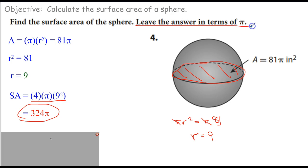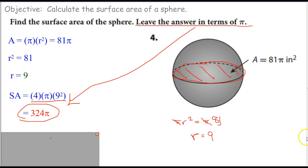It says leave the answer in terms of pi, so 324 pi — we are done. Yahoo. And that actually was the last problem. This is a pretty quick, straightforward lesson. I hope you got something out of the video. If it's still a mystery, come in for tutoring. We'll do it interactively and much slower, and we'll see if I can help you figure this stuff out. Have a good one. Ciao.